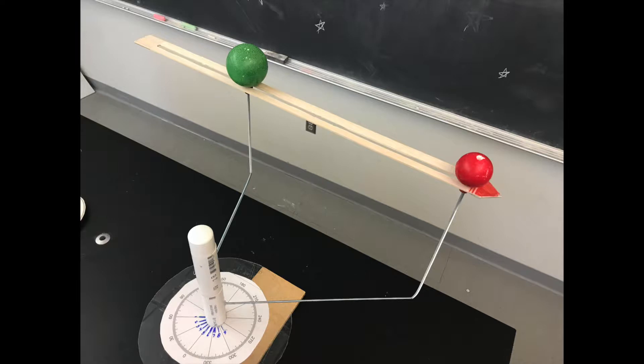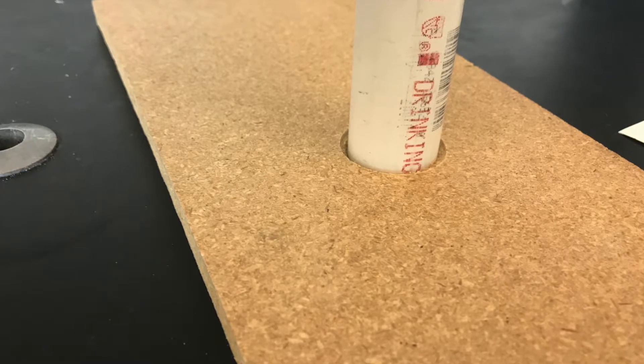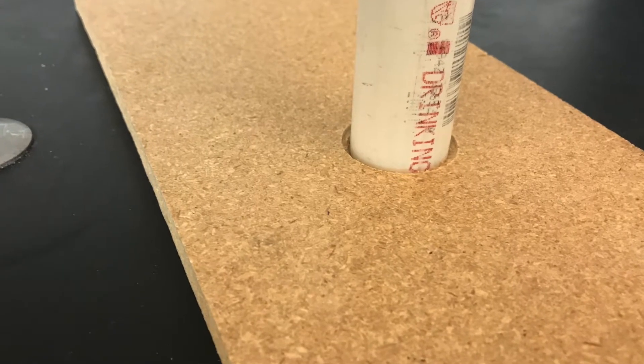We incorporated our original ideas into the new design. Our new model called the Retrograde 2000 was constructed using two different size PVC pipes. We first made a base with a piece of plywood with a hole drilled in the middle that would fit the smaller pipe.